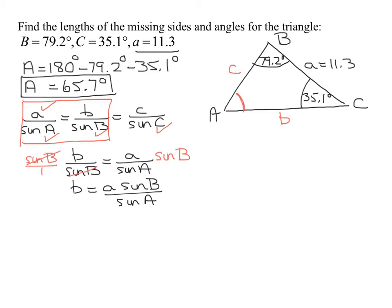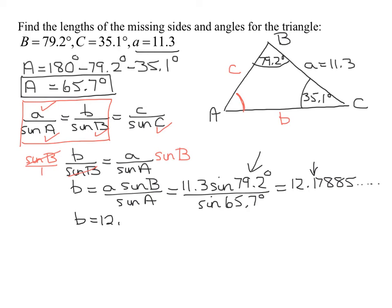Now it's just plug and chug. Side B is 11.3 times the sine of 79.2 degrees, divided by the sine of 65.7 degrees. Make sure your calculator is in degree mode. I got 12.17885... Rounding to one decimal place, the seven rounds the one up, so B equals 12.2.